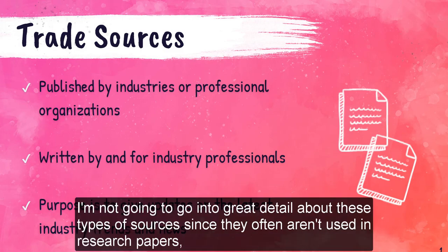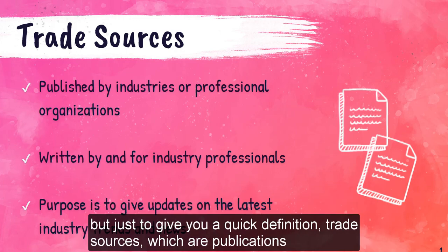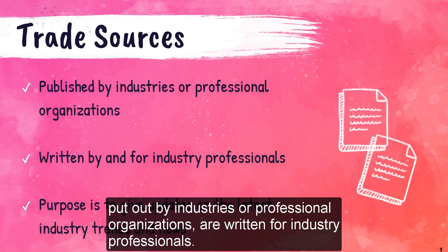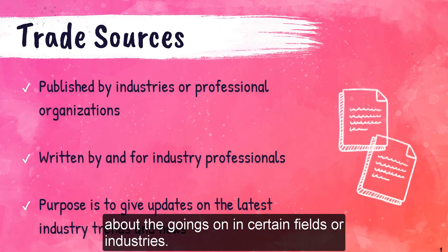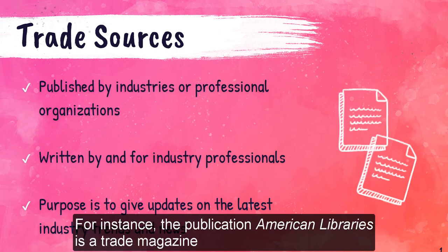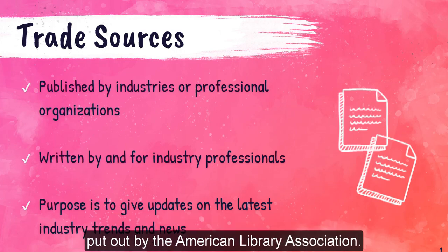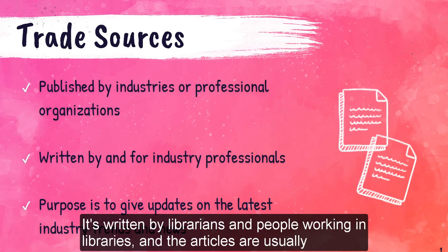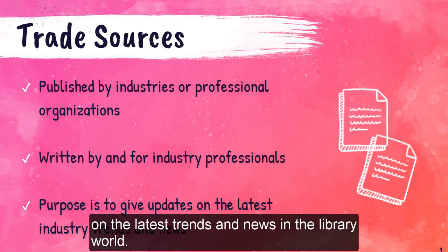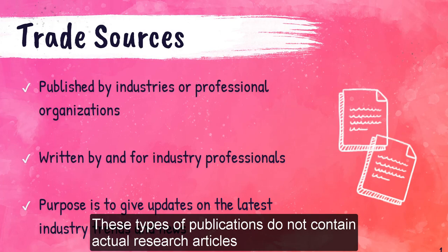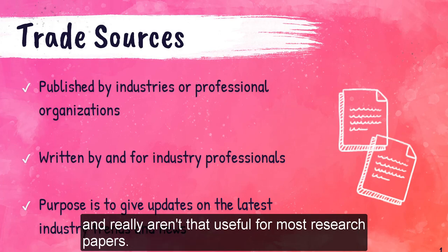Let's start with trade sources. I'm not going to go into great detail about these since they often aren't used in research papers, but trade sources are publications put out by industries or professional organizations, written for industry professionals. They are sometimes news bulletins, sometimes magazines that give updates about the goings-on in certain fields or industries. For instance, American Libraries is a trade magazine put out by the American Library Association, written for librarians. These types of publications do not contain actual research articles and really aren't that useful for most research papers.